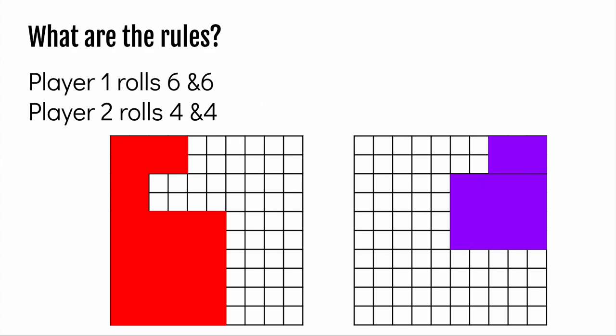Player 1 rolls a 6 by 6 and shades. Player 2 rolls a 4 and 4 and shades.